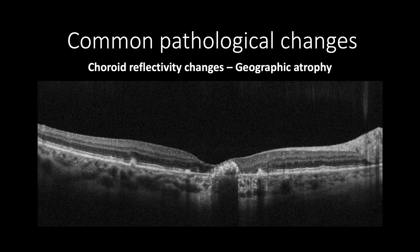The most common reason for the increased reflectivity of the choroid is geographic atrophy. This is due to the absence of the RPE layer to reflect the light. As in this case, dry age-related macular degeneration with drusen in different sizes and RPE atrophy causing geographic atrophy and prominent Bruch's membrane with increased reflectivity of the underlying choroid.